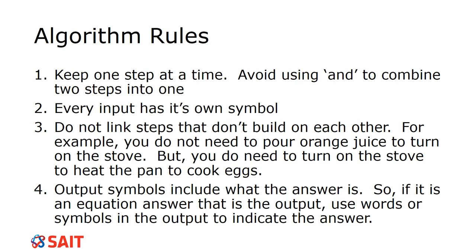Then we have input — this is the information that we know. Every single input needs to have its own symbol. For example, if I'm doing a recipe and I have flour and eggs, I keep them separate — I don't put them together. Flour is its own thing and eggs is the other thing, because those are not two of the exact same thing.